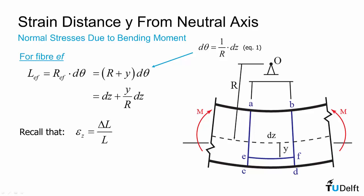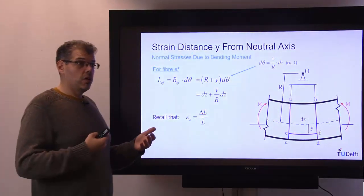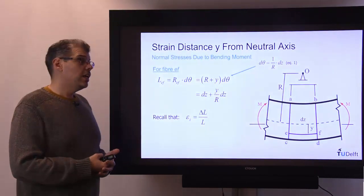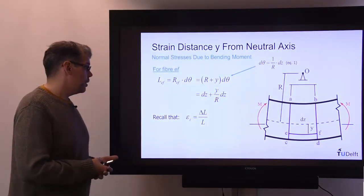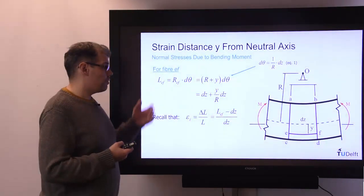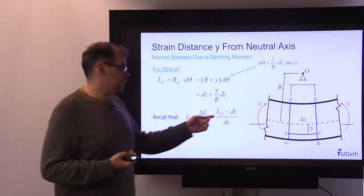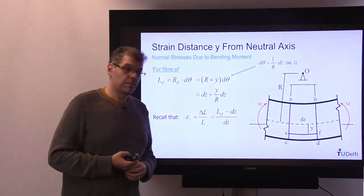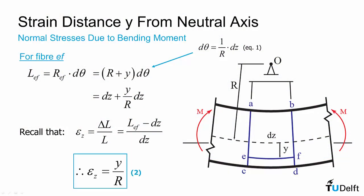Now if we recall that a normal strain, an elongating or contracting strain, is equal to a change in length over an initial length, we can say that it is equal to the length of our fiber EF minus the initial length, which happens to be dz, and divide it by dz. That would give us our strain. So if we substitute these results in, we get that our strain in the axis of the beam, in the z direction, is equal to y/r.